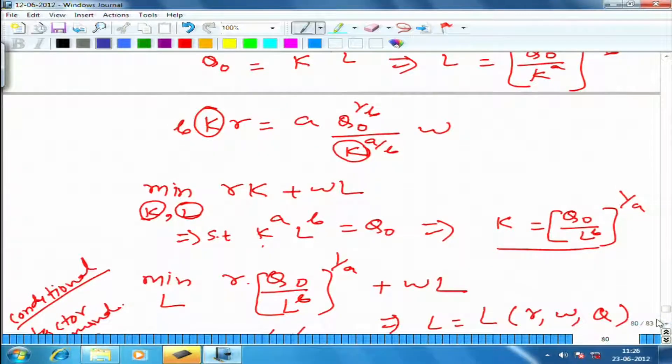We saw three examples where we tried to calculate the minimum cost to produce q amount of output, given the price of one unit of capital is r and the price of one unit of labor is w. Not just one unit, but per unit of time - per day, per hour - we have to be consistent about it.